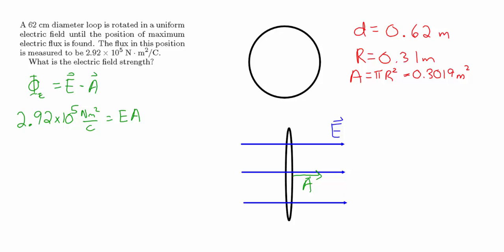The area we're looking at is the cross-sectional area of this circle. We're told the circle has a diameter of 62 centimeters, or 0.62 meters, so the radius is 0.31 meters. Area equals pi r squared, so pi times 0.31 squared gives an area of 0.3019 square meters.